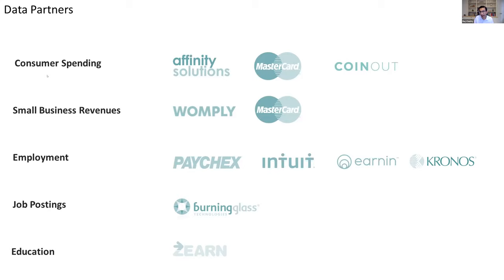Looking at these different data sources, you have really good coverage from companies like MasterCard but of a certain slice of transactions. Colleagues would often ask: aren't you missing cash transactions? Couldn't that be particularly important at the low end of the income distribution? Well, there's a company called CoinOut, which gives people rewards for scanning their receipts. For about 1 million people, you can get data on cash transactions from that source — an example of how you can triangulate various things to get a more complete picture of economic activity.